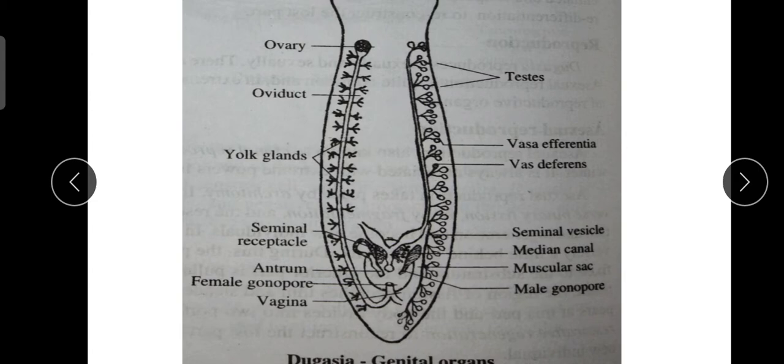Terminally, it opens to a median chamber called the atrium or genital atrium by the male gonopore. The atrium is a common passage for male and female ducts, and it opens out by a common gonopore a little behind the mouth. The cirrus is used for transfer of sperm to the partner during copulation.